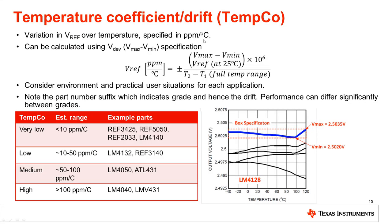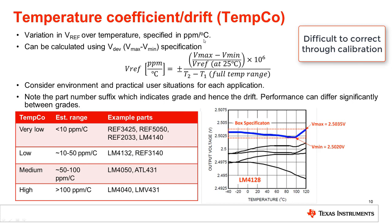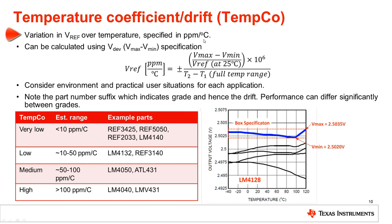Next, we can take into consideration the shift in the reference voltage due to changes in ambient temperature. Temperature drift is often considered one of the most important parameters, as it is very difficult to correct this error through calibration. The temperature coefficient, or drift, is usually specified in parts per million, or ppm, per degree Celsius.